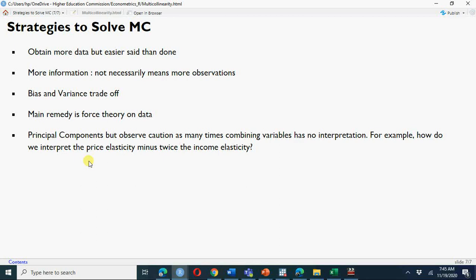Bias and variance trade-off: if you include an extra variable or exclude a relevant variable, there will be bias-variance trade-off. Watch my video on inclusion and exclusion of relevant variables. Main remedy is force theory on data to resolve the problem of multicollinearity.